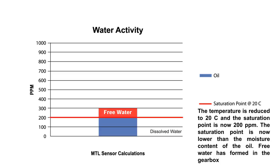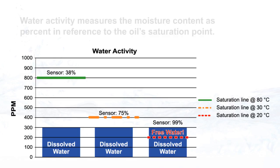The oil temperature is now reduced to 20 degrees Celsius, and the saturation point has dropped to 200 ppm. The saturation point is now lower than the moisture content of the oil. This condition has caused the moisture to separate from the oil, producing free water in the gearbox. The sensor would reflect this by displaying 99%, the maximum value the sensor can display.